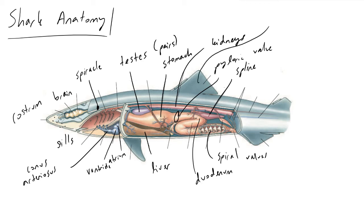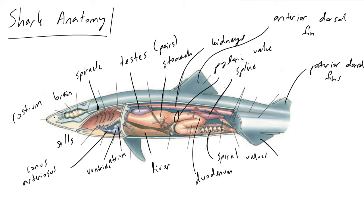We should also talk about the fins on sharks. The main fin is called the anterior dorsal fin, which is the top fin you see people get scared of when thinking of Jaws. In addition to that, we have the posterior dorsal fin, so there are two dorsal fins. All sharks, male and female, are going to have pelvic fins on the posterior side as well as pectoral fins.